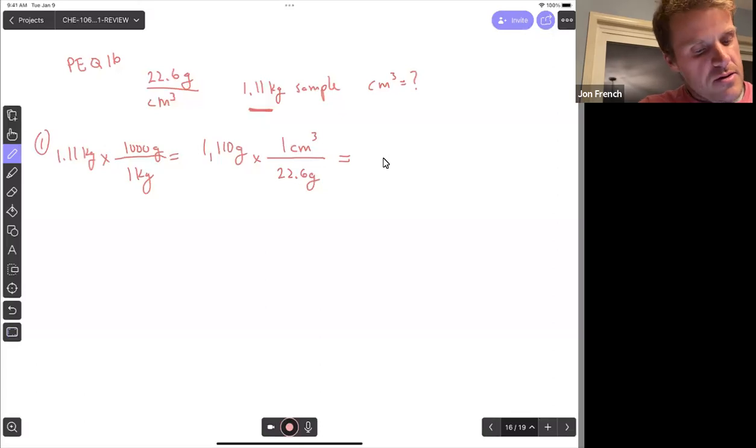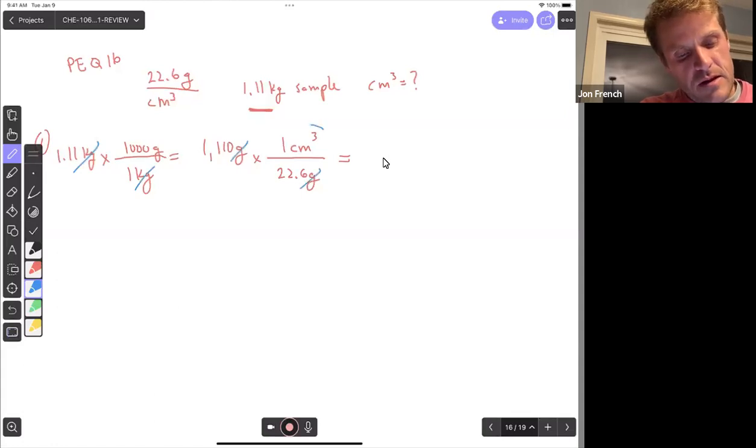So do our dimensional analysis. Kilograms cancel, now grams cancel. We're going to be left with cubic centimeters. That's the unit I'm looking for. So 1,110 divided by 22.6, which was the density. I get 49.1 cubic centimeters. I would go three significant figures because 1.11 is three, the density also has three significant figures. But in this case I would go with the mass of the sample, because we measured the mass of the sample. So that's going to limit the significant figures we report.